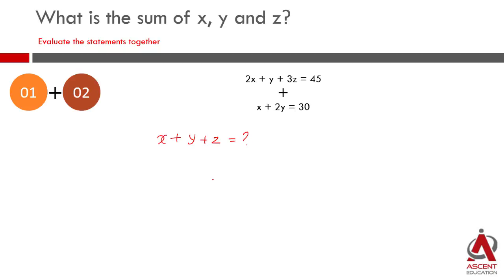I hope you have tried it and come back. This is how I am going to go about it. 2x plus y plus 3z is equal to 45. That's the first equation. Add the second equation: x plus 2y is equal to 30. Adding these: 2x plus y plus 3z plus x plus 2y. This gives 3x plus 3y plus 3z.